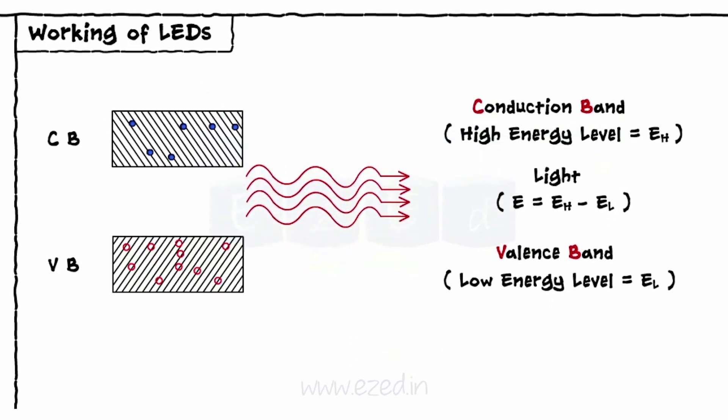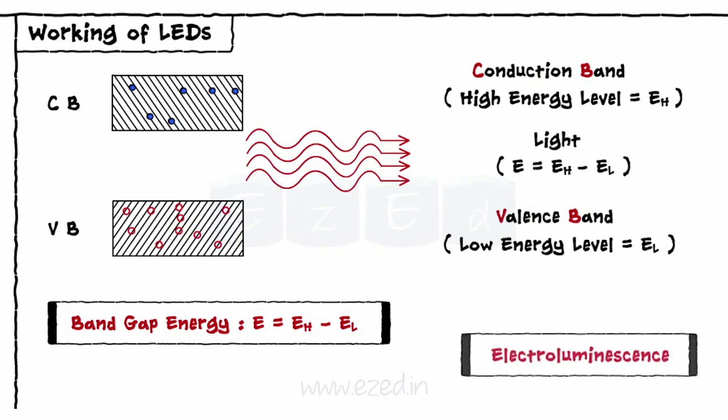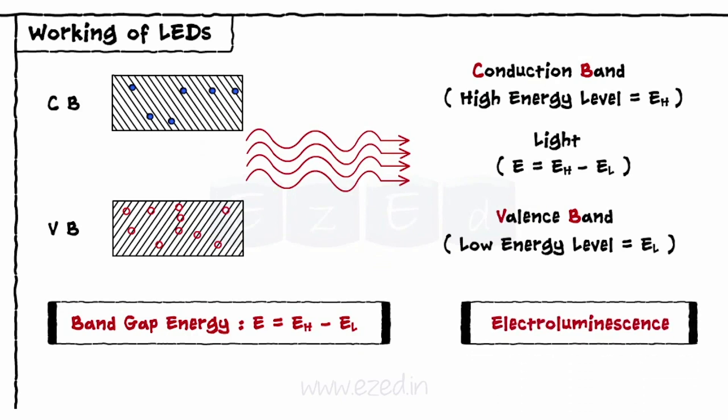This difference is known as the band gap or forbidden gap energy, and the effect is called Electroluminescence. This forms the working principle of LEDs.